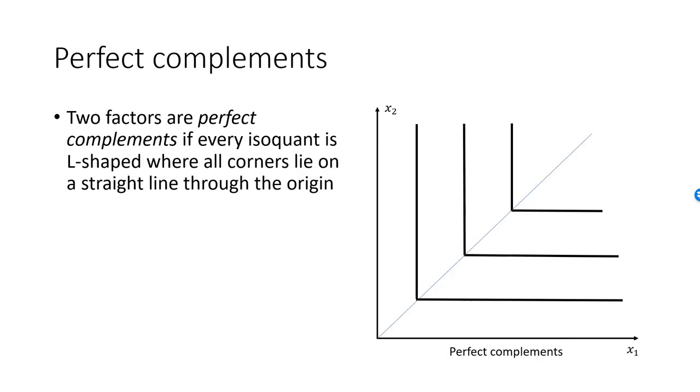We say that our two factors of production are perfect complements if every isoquant is L-shaped and all the corners lie on a straight line through the origin. Let's use an example from Factorio here as well.